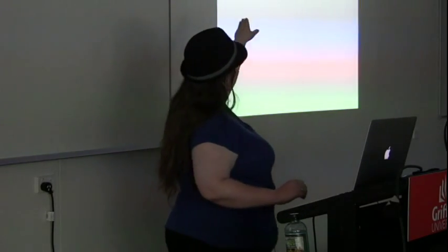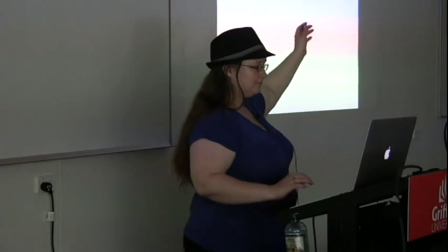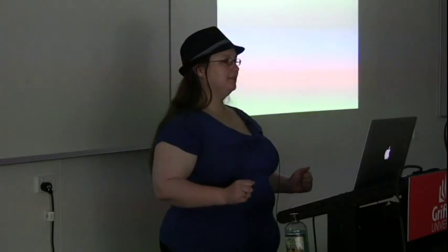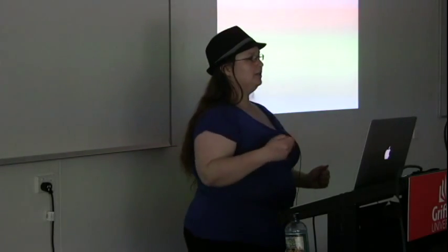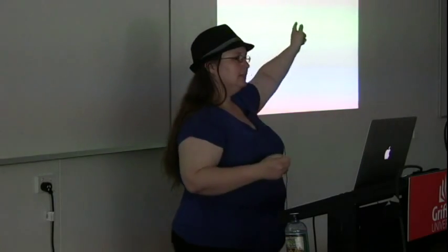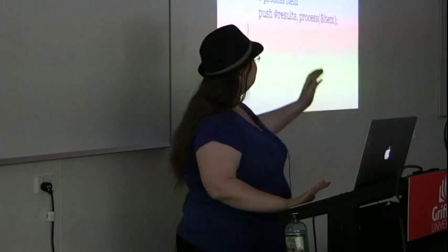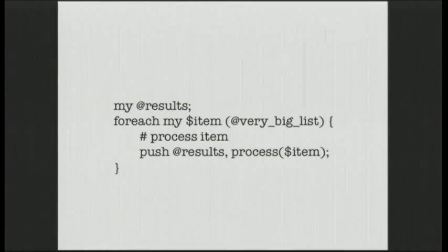Regardless of how many items we have in our very large list, we're only ever going to have the maximum number of forks the process manager allows. It will block on that call to start if you've already used your maximum number of forks. So that's handy - it does that management for you. The parallel forked version requires a little bit more code, but we'd get a many-fold increase in speed. And that's pretty awesome.